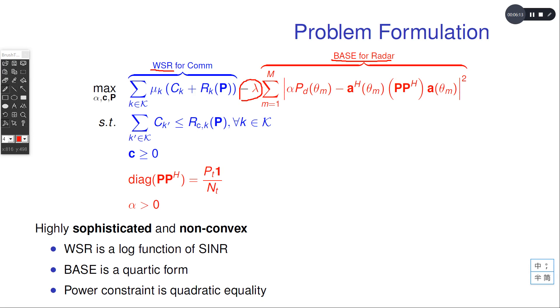To be clear, we denote the communication parts in this optimization problem in blue and the radar parts in red.